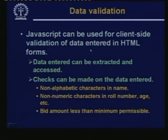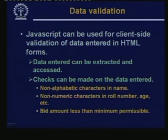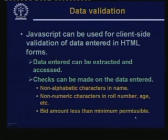For data validation, you need to extract the data entered in the form fields, access them, and make checks — for example, non-alphabetic characters in names, non-numeric characters in roll number or age. In an online auction site you might be submitting a bid, and if the bid amount is less than the minimum permissible amount you will also get an error message.